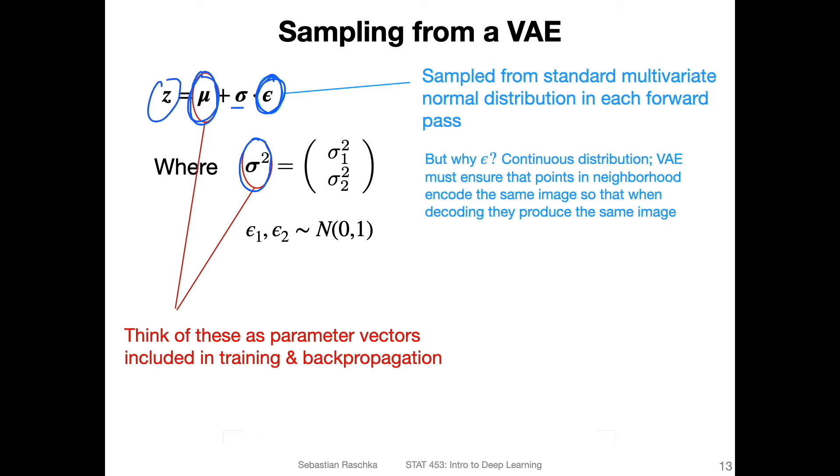So essentially we encode - if we have x, we encode, let's call this the mean vector and let's say the variance vector. So when we put our example through the encoder, we get these two vectors. So that's what we are learning in the network.